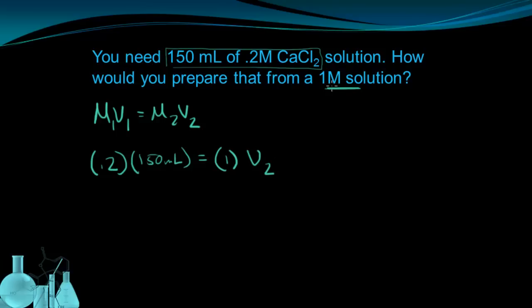I don't know how much of the 1M solution would be equivalent to 150 milliliters of the 0.2M solution. That's what I'm trying to figure out. So if I now solve for V2, I'm going to see that the volume of the 1M solution that I need is 30 milliliters.